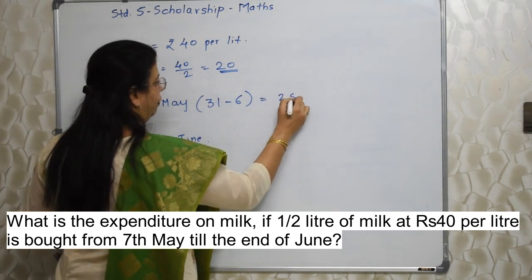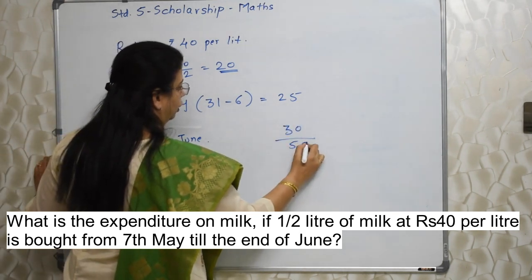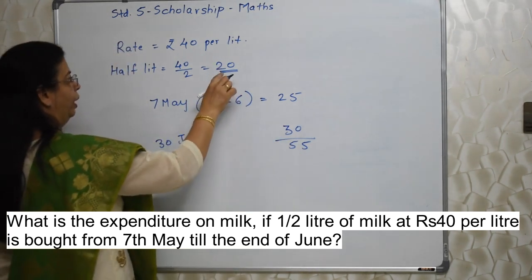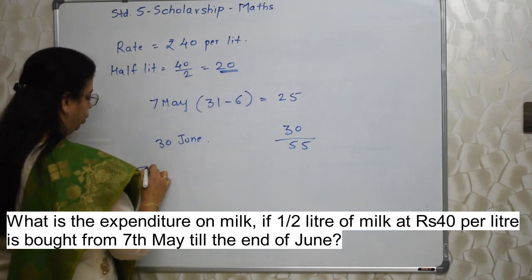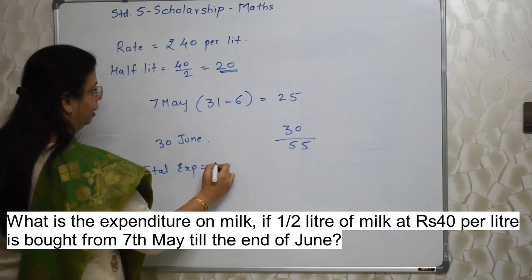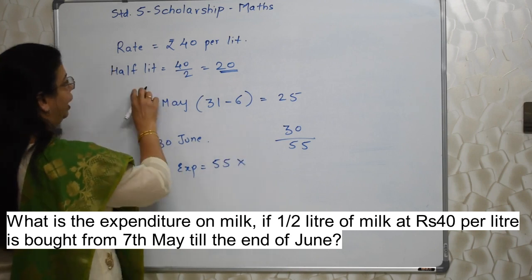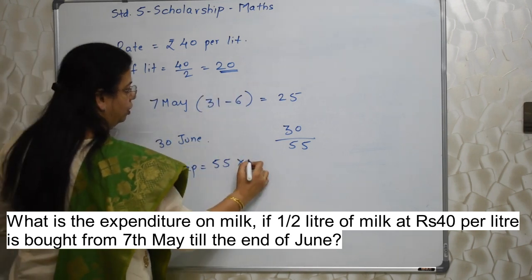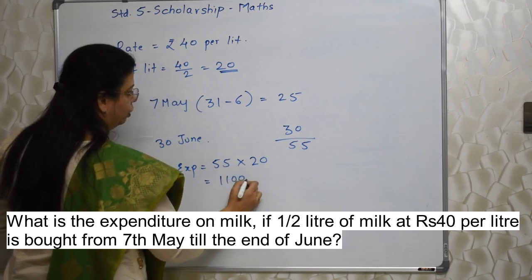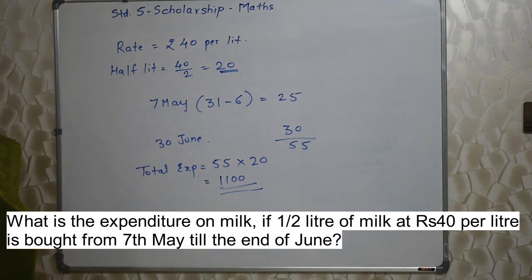So here it is 25 days of May. The entire month of June we are ordering — so 30 days. In all, the days are 55. All these 55 days we have to pay 20 rupees per day. So total expense will be number of days into rate: 55 days, and every day the cost of milk was 20 rupees because it's only half a liter. So it is 1100 rupees. Our answer is 1100 rupees.